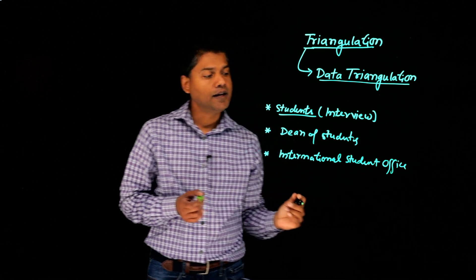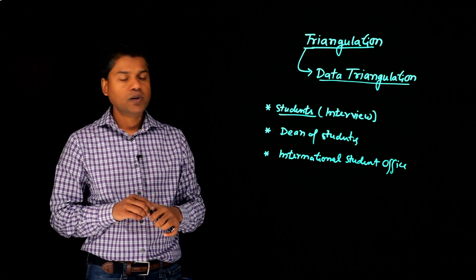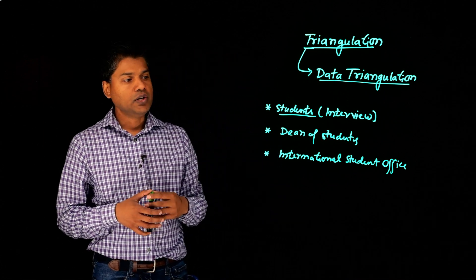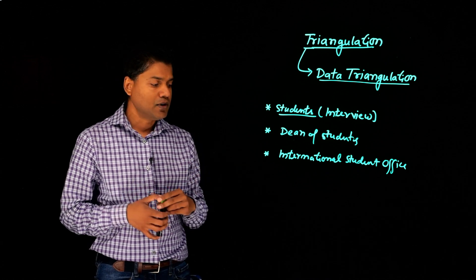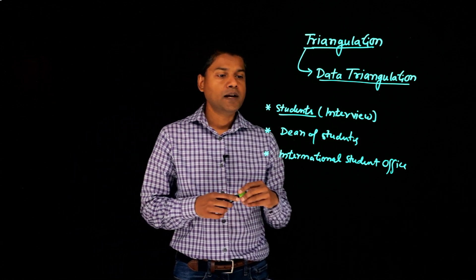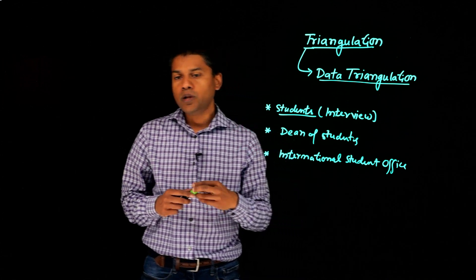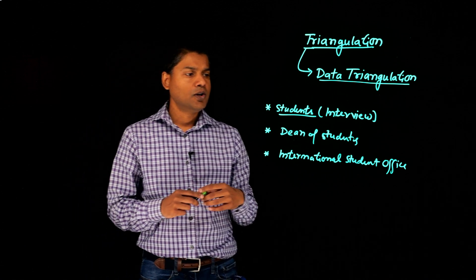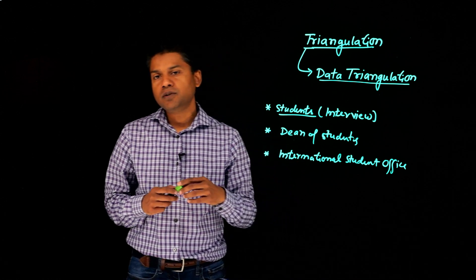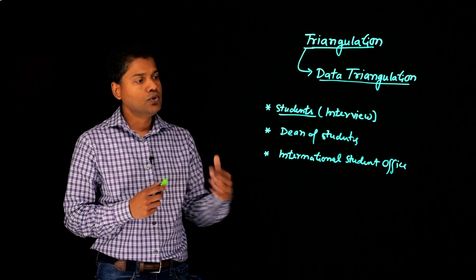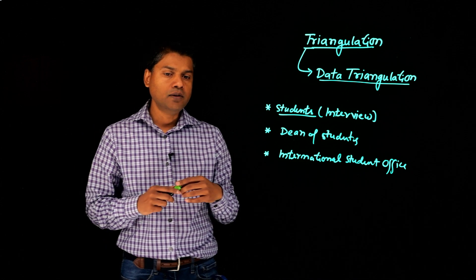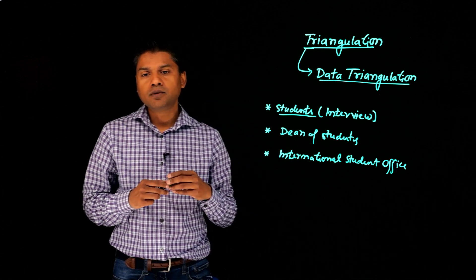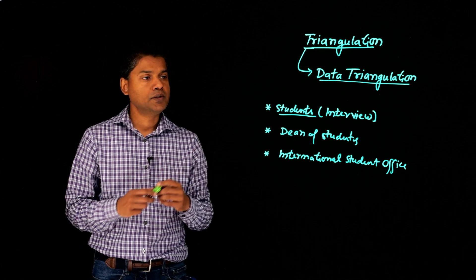I can also reach out to the international student office. Every university has an international student office where students go for paperwork, visa-related things, or if they have any trouble or challenges. This is generally international students' first support system. The international student office has people who help you navigate logistical challenges or document-related things. So the international student office could be another source of data to understand what challenges international students face when they come to the U.S.